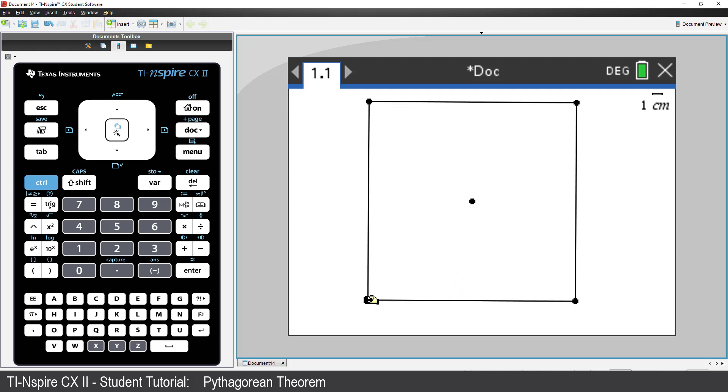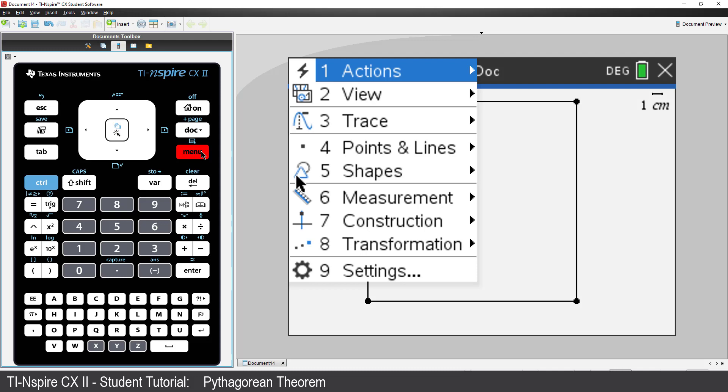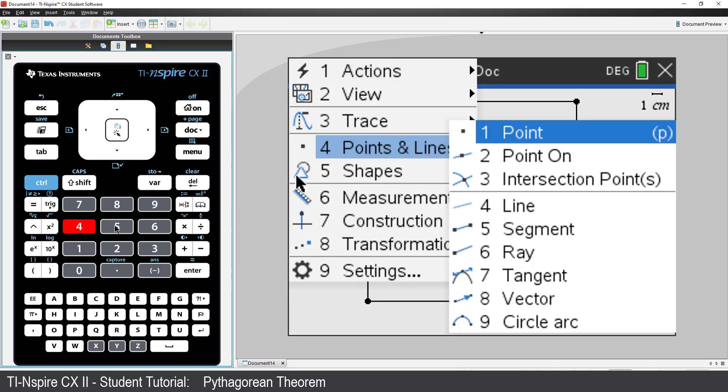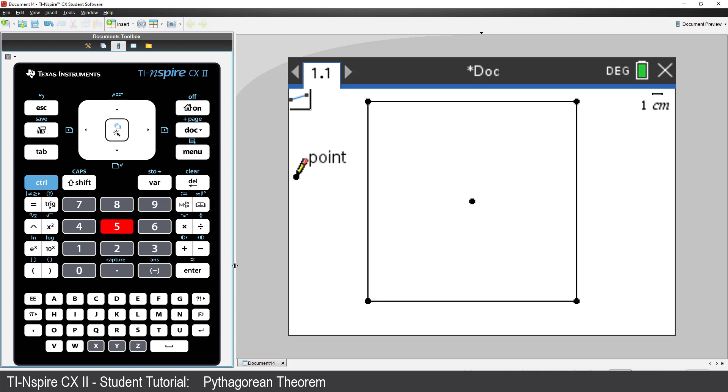The next step is to place a segment on one side of the square. Press Menu, Points and Lines, and select Segment. Click on the bottom left vertex, then the bottom right.